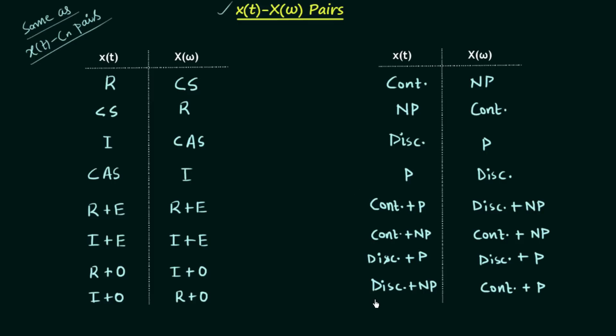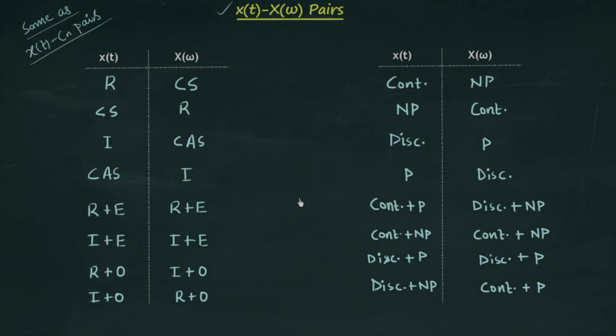So this is another set, and combining the two sets, you have a total of 16 x(t)-X(ω) pairs. Try to remember all 16 pairs because in the coming presentations, when we solve multiple choice questions, we will use these pairs. This is all for this lecture; if you have any doubt, you may ask in the comment section.